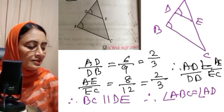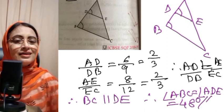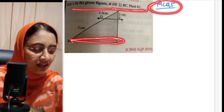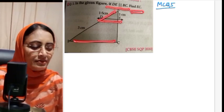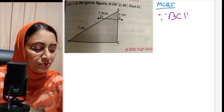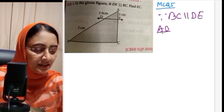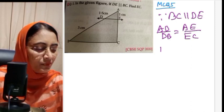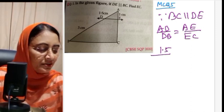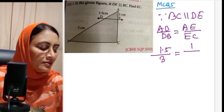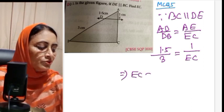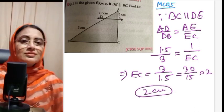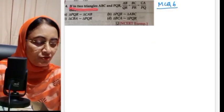So 48 degrees is the correct answer for MCQ 4. MCQ number 5: in the given figure, DE is parallel to BC. Since parallel is given, we use BPT: AD/DB equals AE/EC. Substituting: AD is 1.5, DB is 3, AE is 1. So 1.5/3 equals 1/EC, which gives EC equals 3/1.5 equals 30/15 equals 2 centimeters. That is the answer.